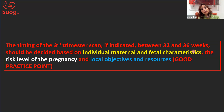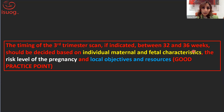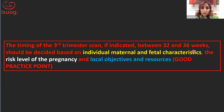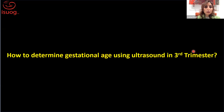Therefore, in the guideline we recommended that the timing of the third trimester ultrasound scan, within the gestational age range of 32 to 36 weeks, depends on the individual maternal-fetal characteristics, the risk profile, the objective of the scan, and of course the available resources.